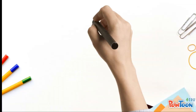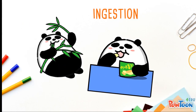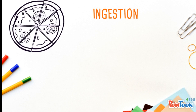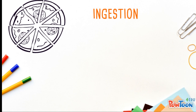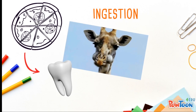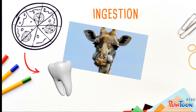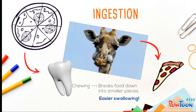The first step of the digestive process is ingestion, which is the stage where we intake food into the alimentary canal through our mouth. In this stage, food is physically broken down into smaller pieces by your teeth for easier swallowing.